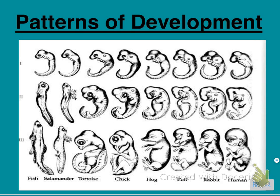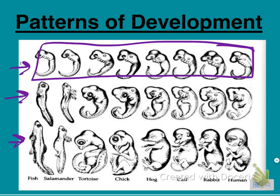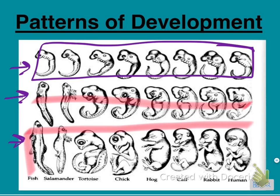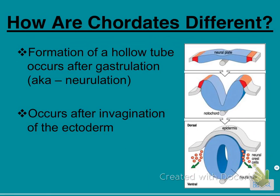Here's a picture of patterns of development. At stage one, two, and three, notice how similar everybody looks. Then you start getting some specialization, until finally in the last stage everything looks very different — but at the beginning it all started the same.